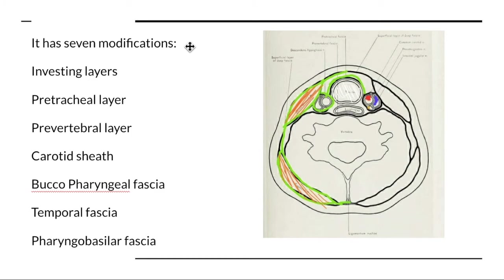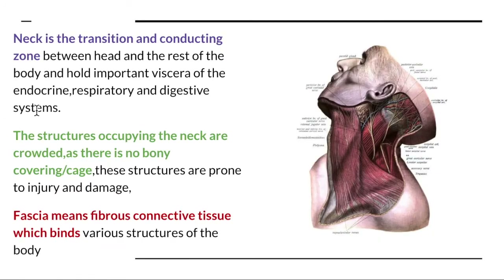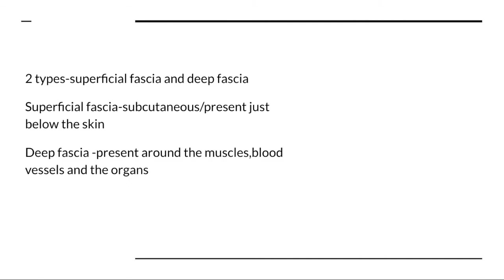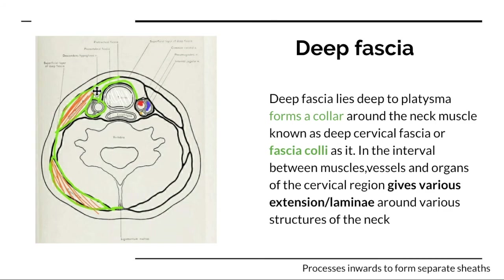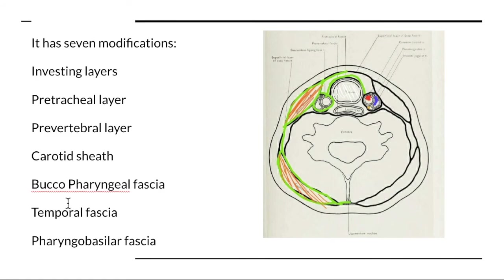To quickly recap: the fascia surrounding the neck is the cervical fascia, divided into the superficial and deep fascia. The superficial fascia contains areolar tissue with the paper-thin platysma, and below the platysma are the cutaneous nerves, superficial veins, lymph vessels, lymph nodes, and some small arteries. The deep fascia surrounds the neck like a collar and has seven modifications. We'll continue with the investing layer in the next video.